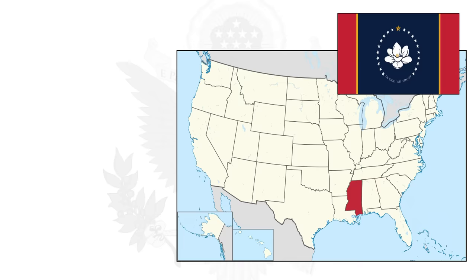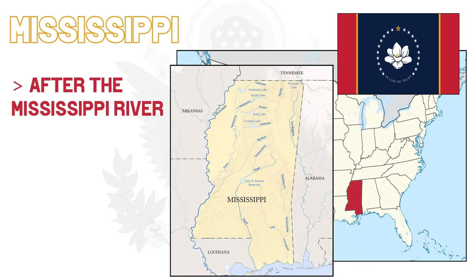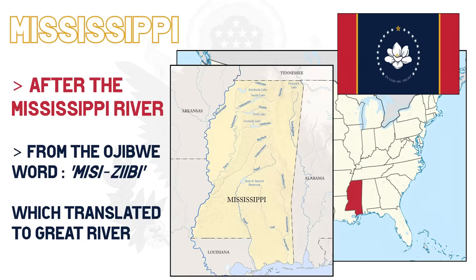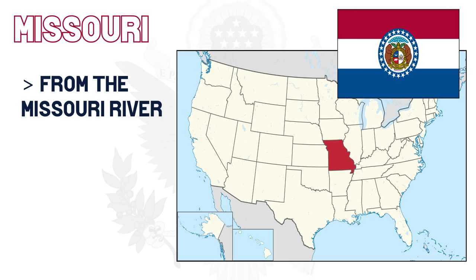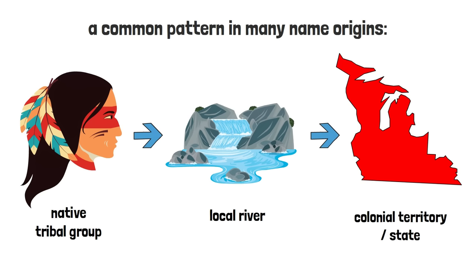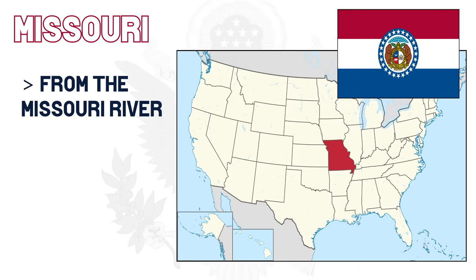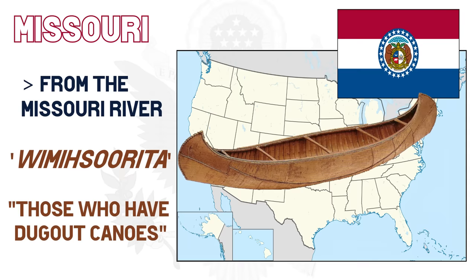Mississippi follows the trend of being named after the local river — the Mississippi — which defines its western boundary. European settlers named it after the Ojibwe word Mizi-Zibi, which translates to 'Great River.' The Missouri River also led to the naming of the state of Missouri, and the river itself got its name from the indigenous Missouri natives — following that method we saw at the start of the video: native tribe, river, colonial territory, and state. These specific natives were called the Wimisorita, meaning 'those who have dug out canoes,' and the name was adapted and westernized.